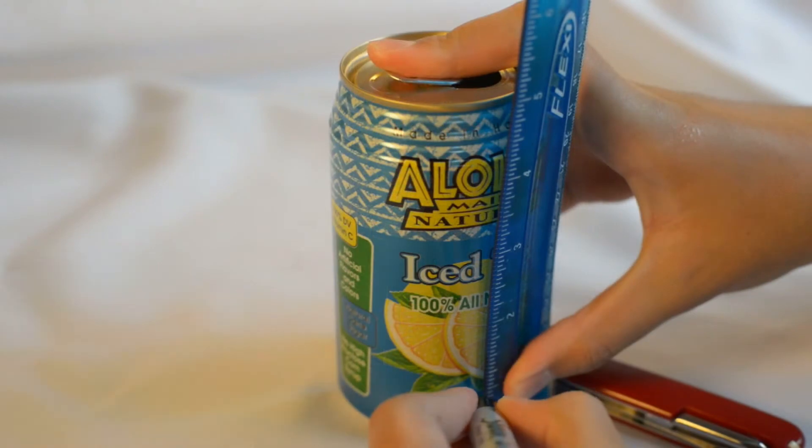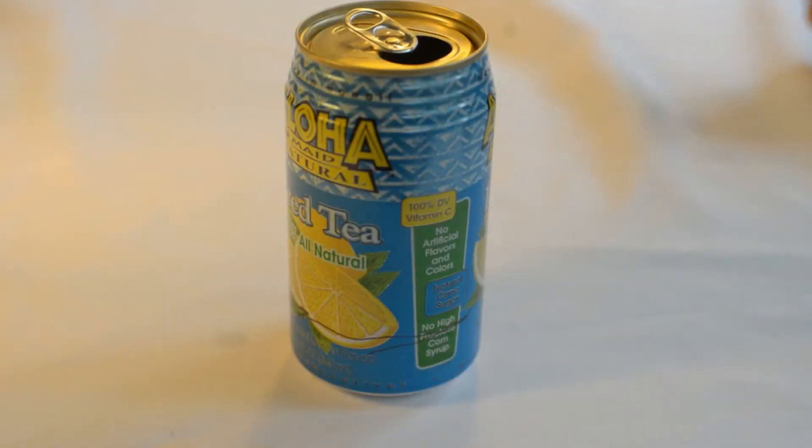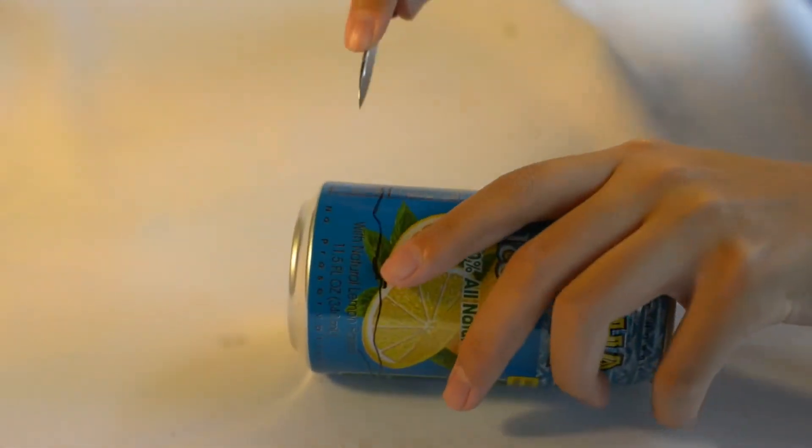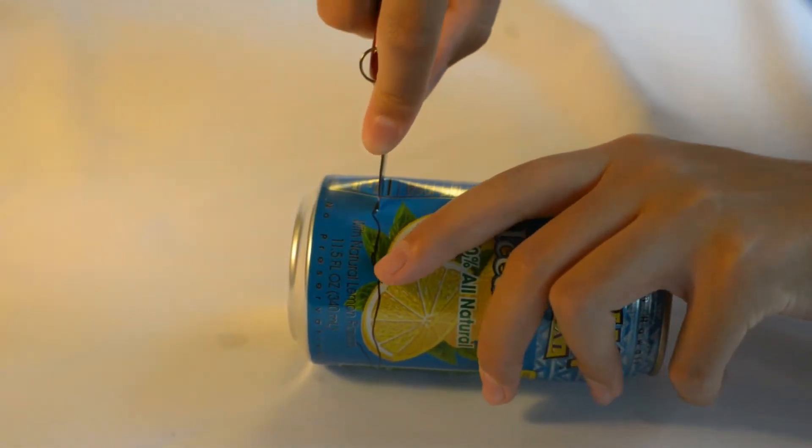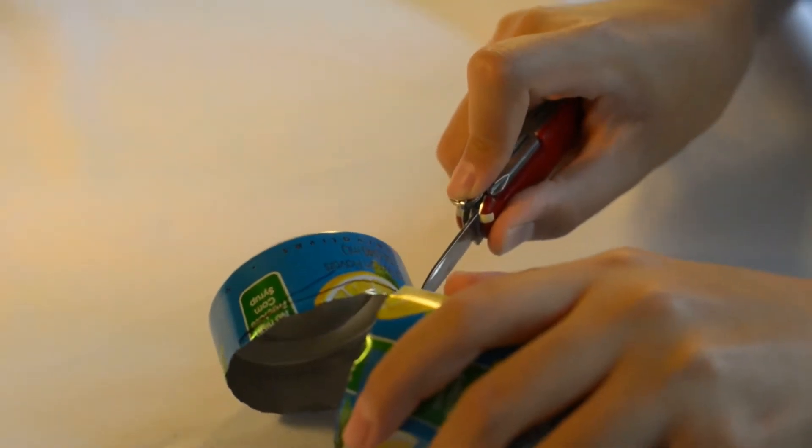For the bottom part, get your other can and mark a line about 1 3/8 of an inch from the base of the can and cut it out.